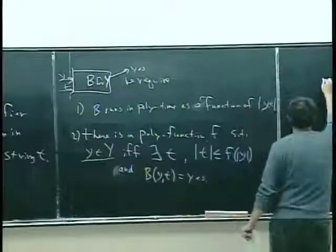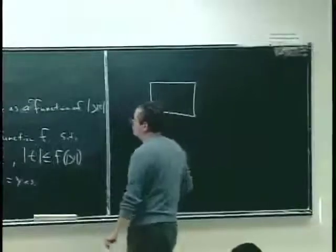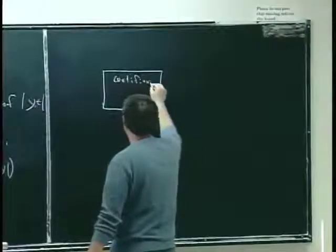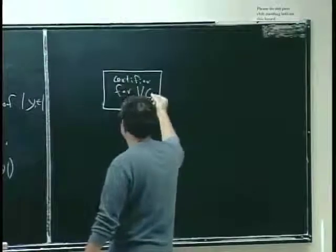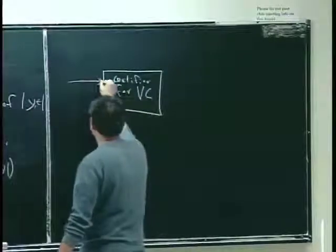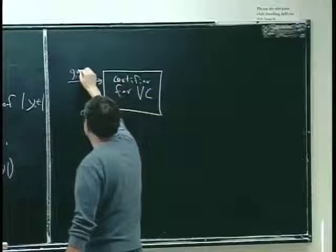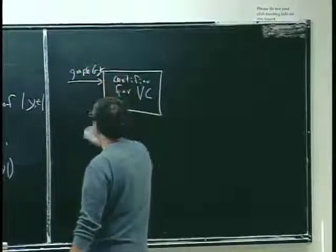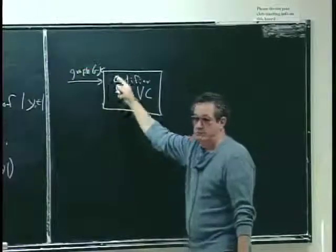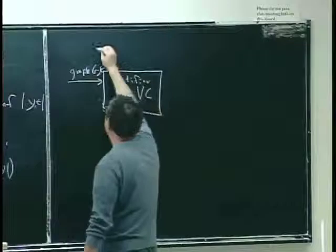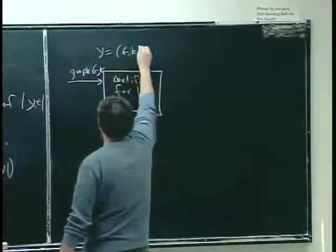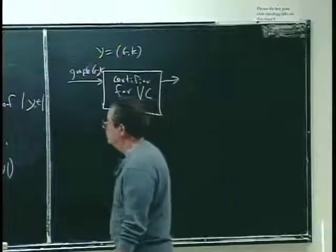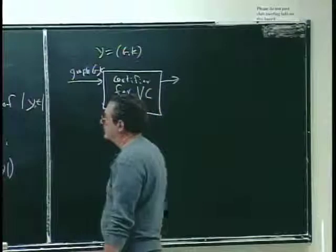Let me make this more concrete with vertex cover. So this is going to be a certifier for vertex cover. What is the input to the certifier? It's some particular graph G and a target K — that's what the input to the vertex cover problem looks like. And we want this algorithm to be an efficient certifier for vertex cover.